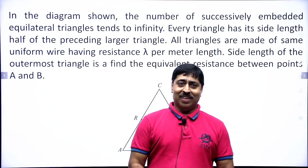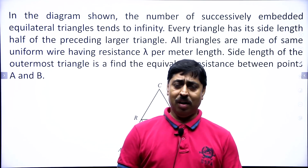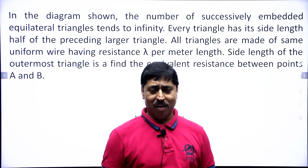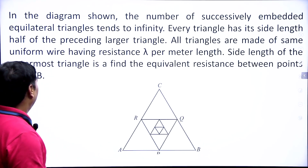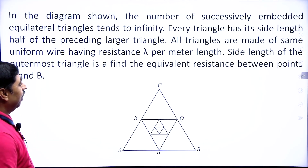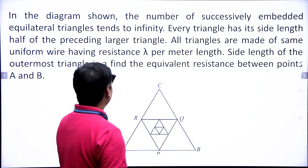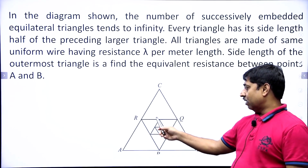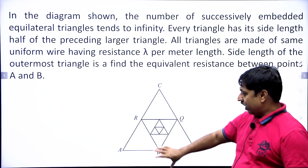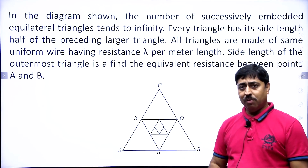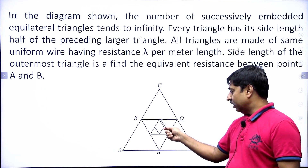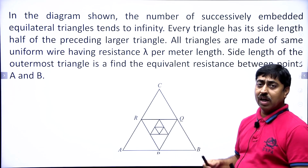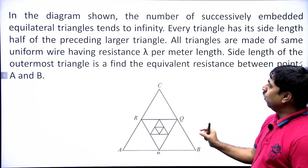Hello students. In this session we will have a question in which you will have a lot of concepts made clear. In the diagram shown, the number of successively embedded equilateral triangles tends to infinity. This is an equilateral triangle; inside that triangle there is another equilateral triangle. The side length of this triangle is half the side length of the original first triangle, and then inside this second triangle there is again an equilateral triangle, and so on. There are infinite such embedded equilateral triangles.